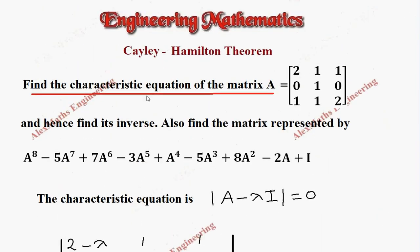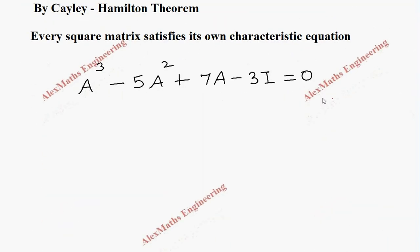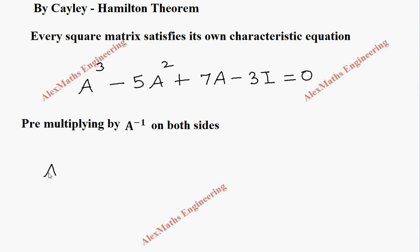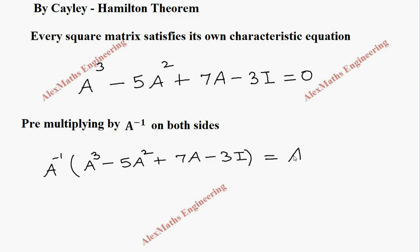We got the characteristic equation using Cayley-Hamilton. As a second part, we are going to find the inverse of A. For finding the inverse, we have to multiply this expression by A inverse on both sides. So we get A inverse into A cubed minus 5A squared plus 7A minus 3I equal to A inverse into 0.